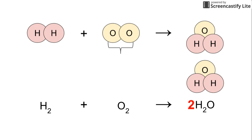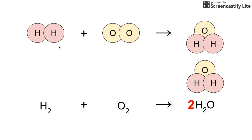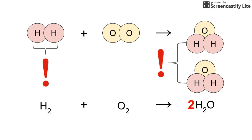Let's check it out. There are two oxygen atoms on the reactant side, and there are two oxygen atoms on the product side — we are looking balanced for oxygen. But of course we have to go back and check hydrogen again. There are two hydrogen atoms in the first molecule of water and two hydrogen atoms in the second molecule of water, bringing us to a total of four hydrogen atoms on the product side. That now becomes a problem.